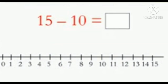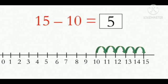Next example. 15 minus 10. Children, here we are going to use forward method. First start jumping forward from 10 to 15. Let us start. 1, 2, 3, 4, 5. We have taken 5 jumps. So, 15 minus 10 is equal to 5.